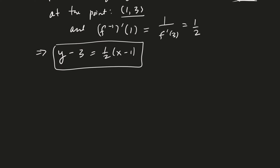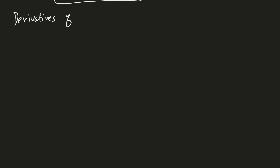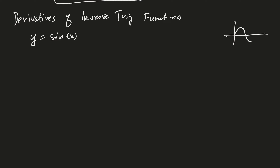Now we're going to look at the derivatives of the inverse trigonometric functions. Starting with y equals sine(x) — remember sine looks like a wave, so we have to restrict the domain to make it one-to-one. The usual restriction is from −π/2 to π/2, so x is between −π/2 and π/2.